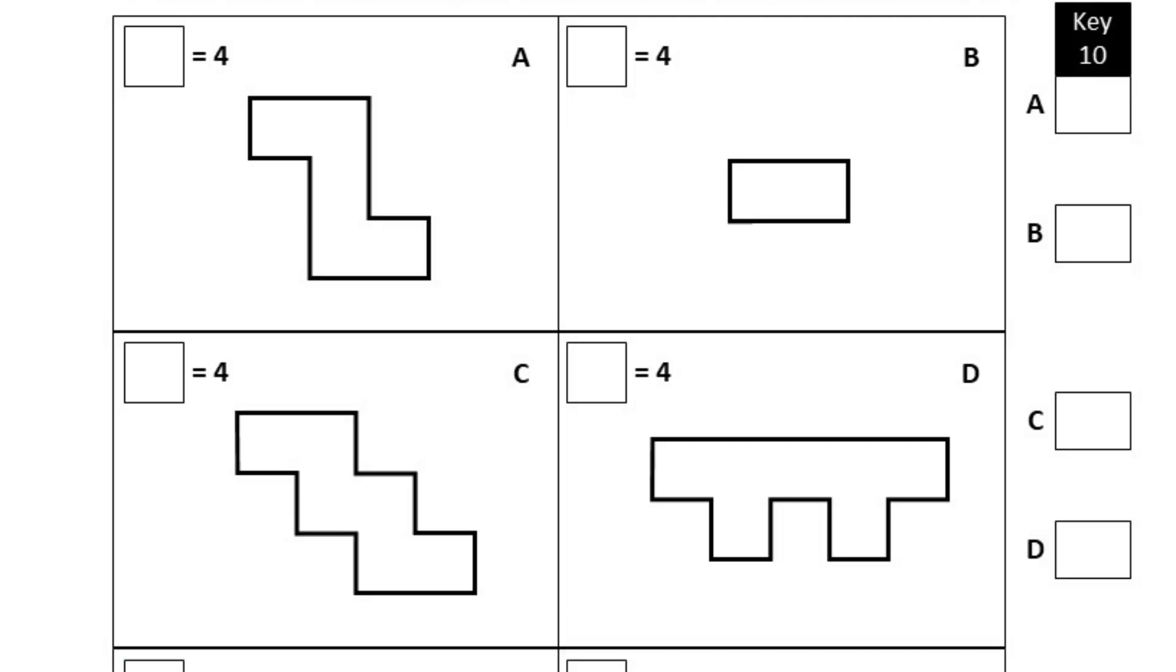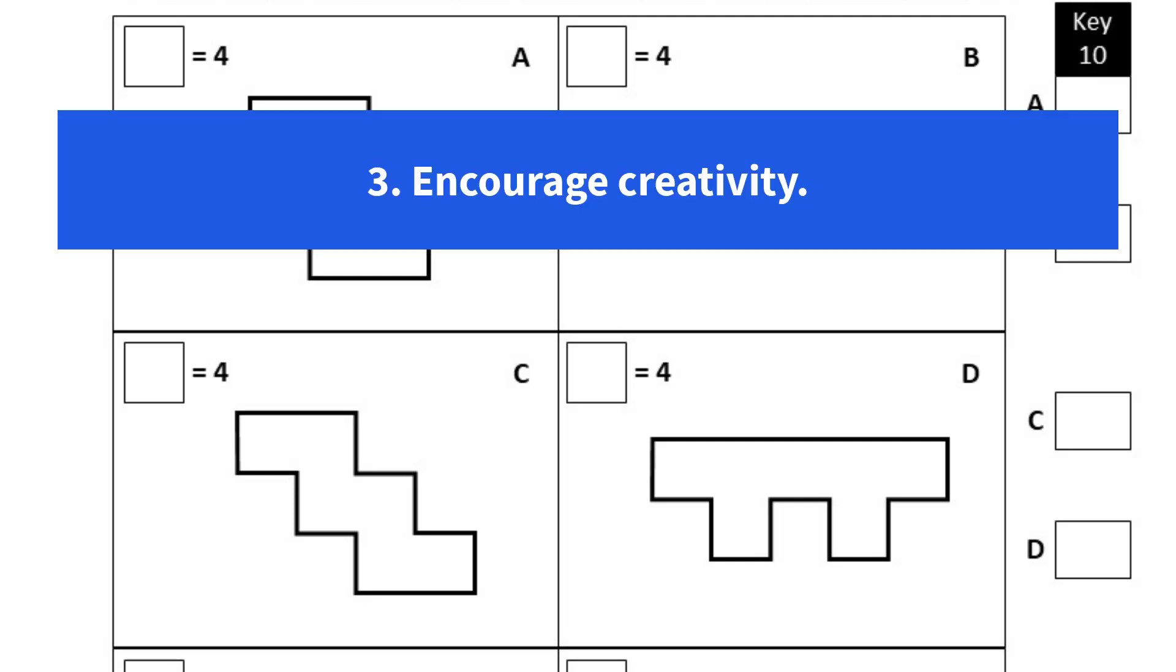Tip number 3 is to encourage creativity. There is not one single way to do this. For one student, it might be easiest to break this into 3 groups of 8. But another student might see it differently. For that student, it might be easier to break it into 2 groups of 12.